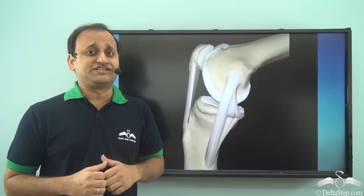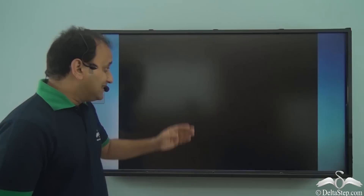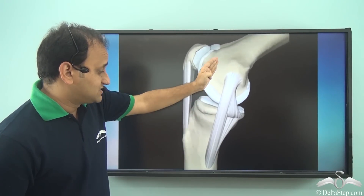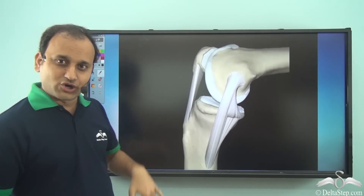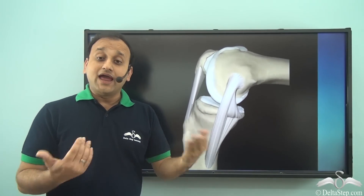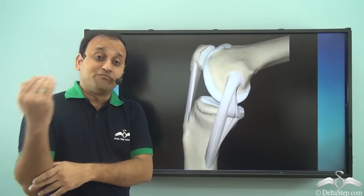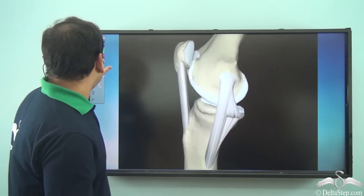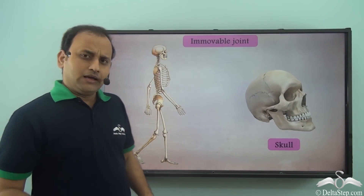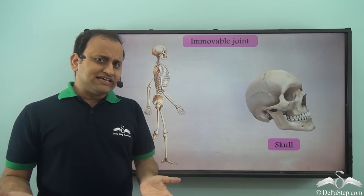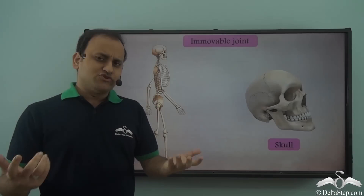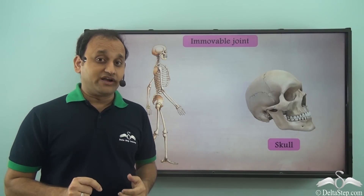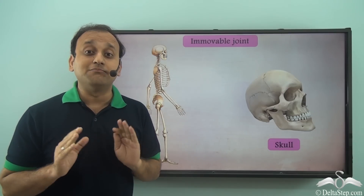How are the bones holding on to each other? There are certain stretchable structures that hold the joints together and also allow movement because they are stretchable. Apart from all these joints with different types of movements, there are certain joints in the body which are immovable.